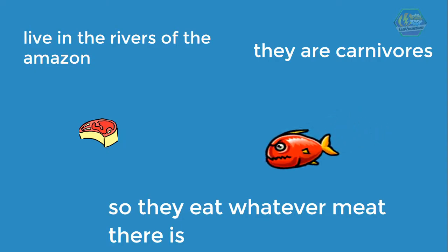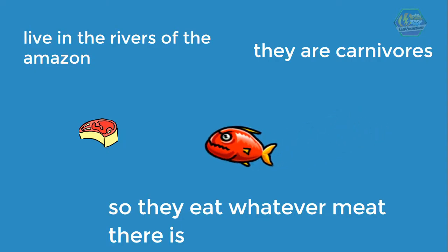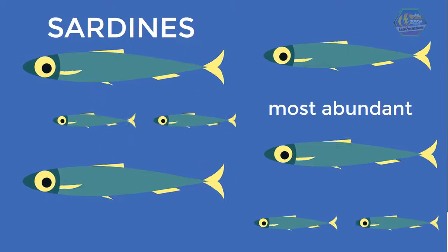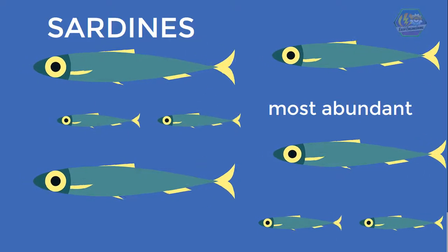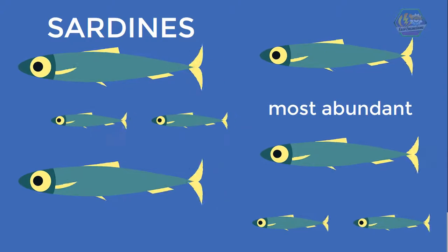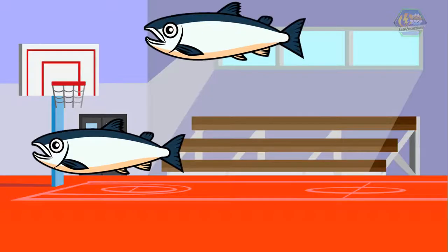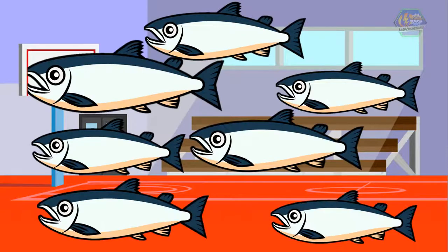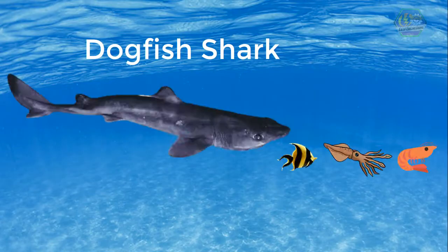Most fish live in the ocean. Sardines are one of the most abundant — sometimes they travel in a school that could fill up an entire gymnasium. The dogfish is a type of shark that likes to eat small fish, squid, shrimp, and even crabs.